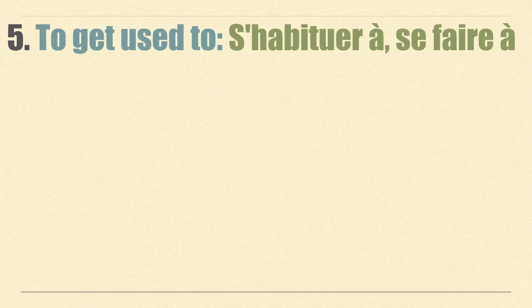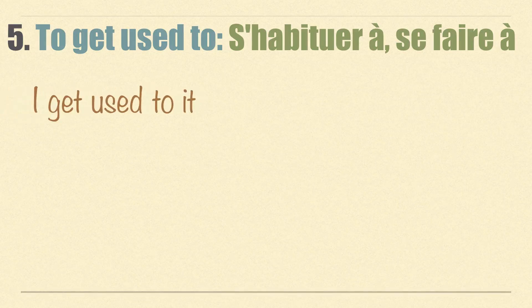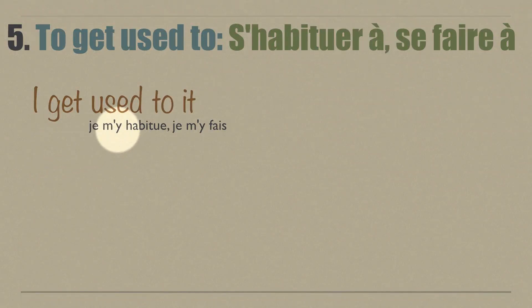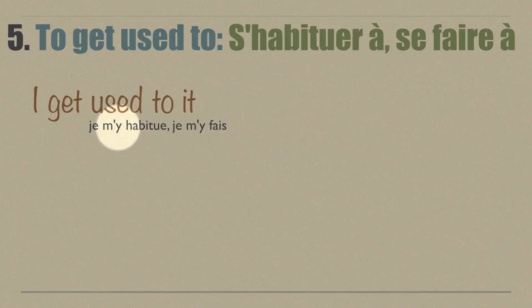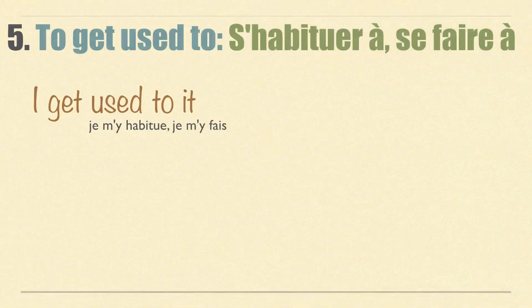Now, how to translate 'to get used to'. We have two very common verbs for that: the first is s'habituer à and the second is se faire à. Both are reflexive verbs, as shown by the s' or se. To say 'I get used to it', you say je m'y habitue or je m'y fais. The letter y is a pronoun replacing 'it', because the expression takes the preposition à, and when we have that preposition we replace the noun with the pronoun y.